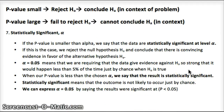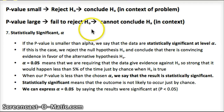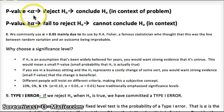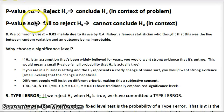A small p-value means we reject the null hypothesis and conclude the alternative. A large p-value means we fail to reject the null hypothesis — we can't conclude the alternative in context of the problem. We use 0.05 most often, but just like we used 90%, 95%, and 99% confidence intervals, the significance test uses 1%, 5%, and 10% significance levels. Generally, we use 5% the most.